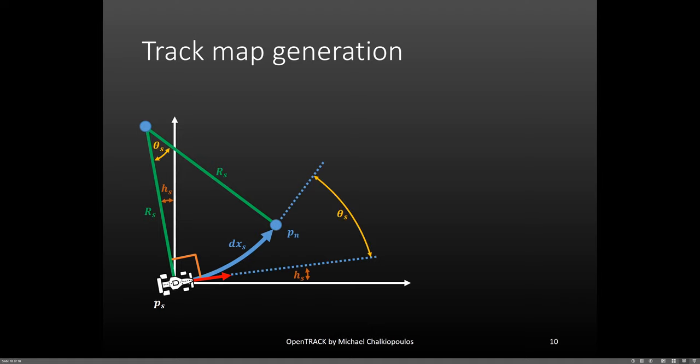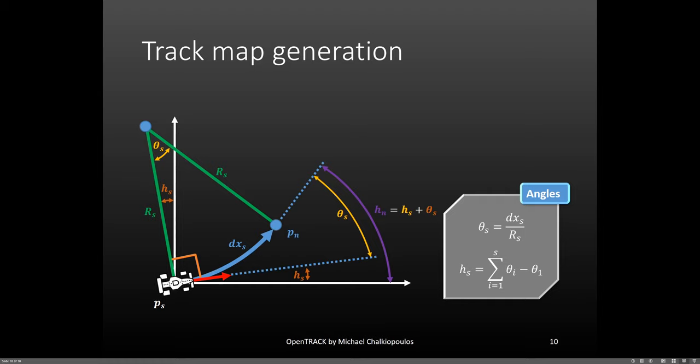Moreover, the angle that is formed between the two heading directions at the points PS and PN has the same value as the circular segment angle theta S. The heading angle at point PN is the summation of the heading angle at point PS and the circular segment angle. This means that the heading angle at the specified point is equal to the cumulative sum of all the circular segment angles for all the previous points.